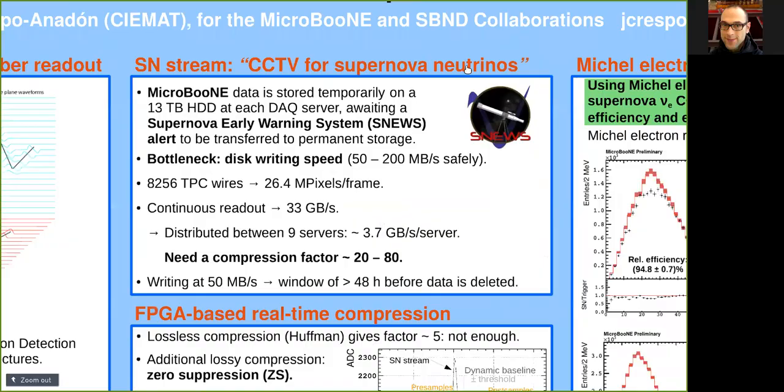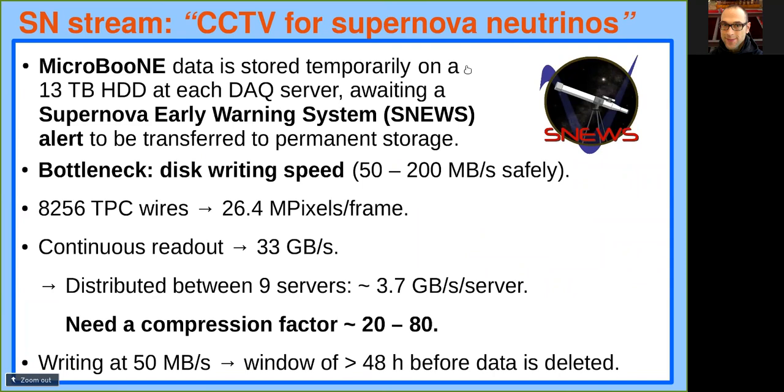Because of the surface location of the detectors, self-triggering is not an option. Instead, the supernova neutrino stream acts as a CCTV for supernova neutrinos. We use the supernova early warning system alert as delayed trigger.